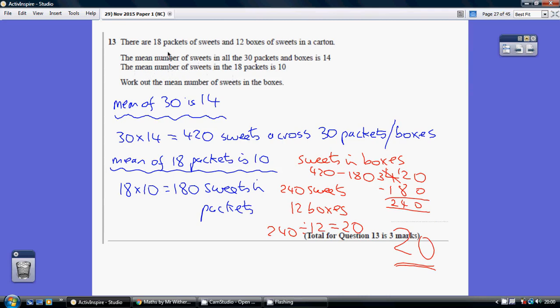Now how do we work out the mean? Well we add up the total and we divide by the number of numbers to give us the mean. Now on this occasion we're working backwards.